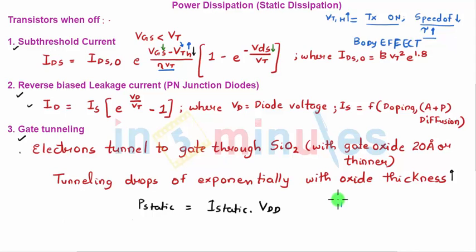This technique is nothing but multiple threshold CMOS circuit or MTCMOS circuit, where certain transistors will have a low threshold voltage and certain will have a high threshold voltage, which will help us in the reduction of subthreshold current.